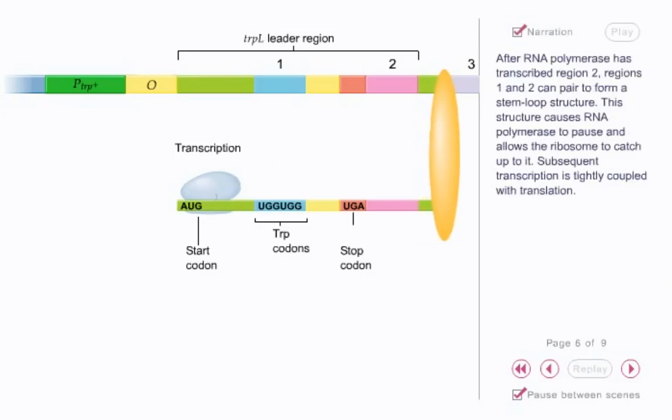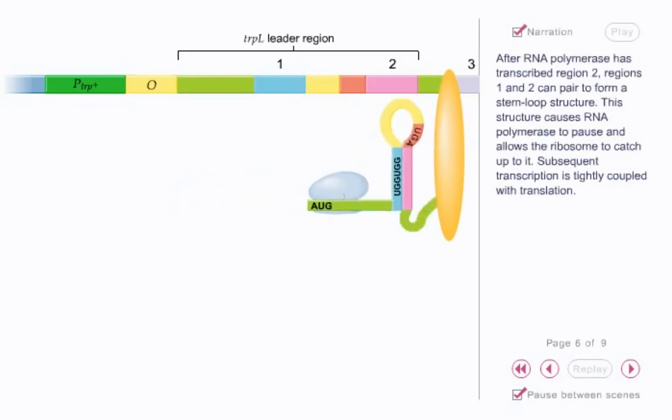The position of the ribosome along the leader mRNA plays an important role in the regulation of transcription. After RNA polymerase has transcribed region 2, regions 1 and 2 can pair to form a stem-loop structure. This structure causes RNA polymerase to pause and allows the ribosome to catch up to it. Subsequent transcription is tightly coupled with translation.